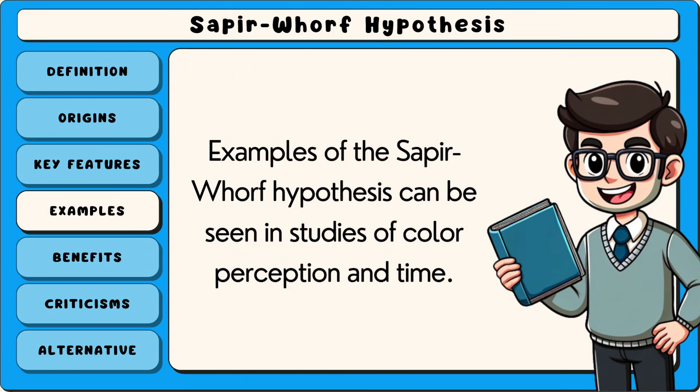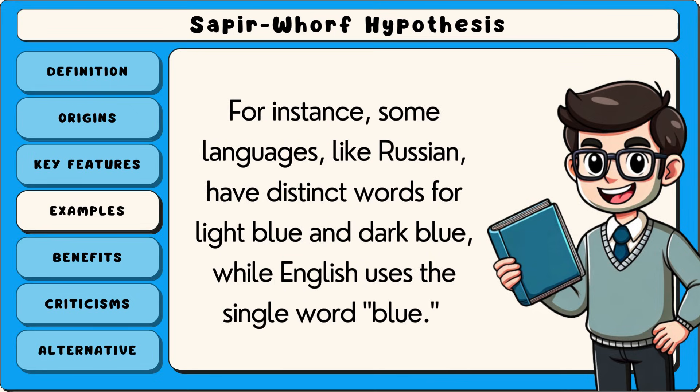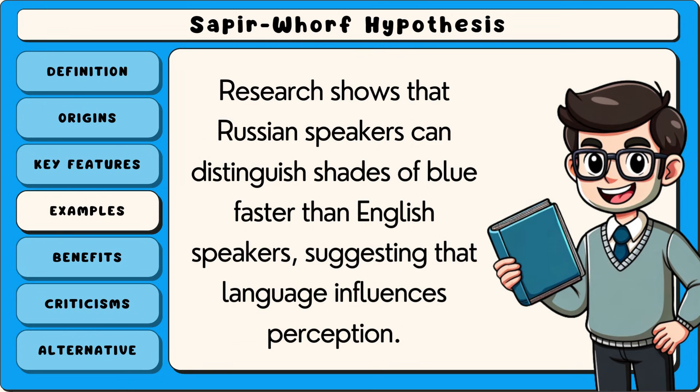Examples of the Sapir-Whorf hypothesis can be seen in studies of colour perception and time. For instance, some languages, like Russian, have distinct words for light blue and dark blue, while English uses the single word blue. Research shows that Russian speakers can distinguish shades of blue faster than English speakers, suggesting that language influences perception.